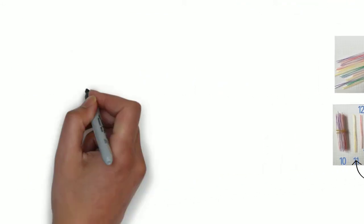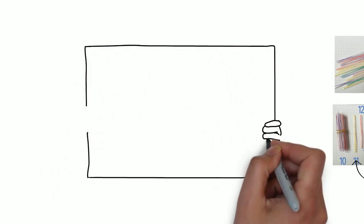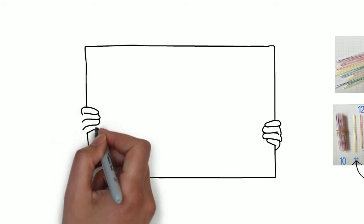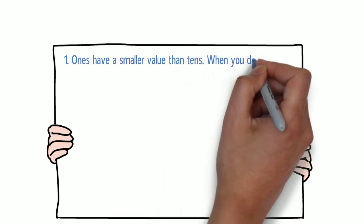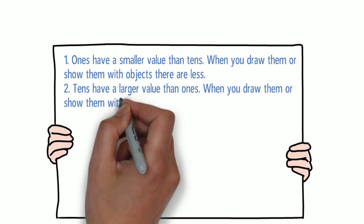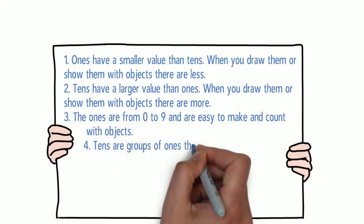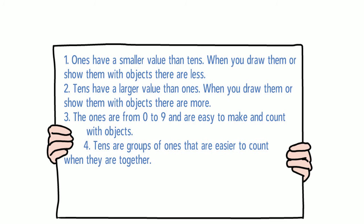If you're not feeling so confident, just remember these main ideas. Ones have a smaller value, so you'll have less objects when you count them out. Tens have a higher value, so you'll see more objects. Ones are from 0 to 9, and tens are just groups of ones that have been put together.